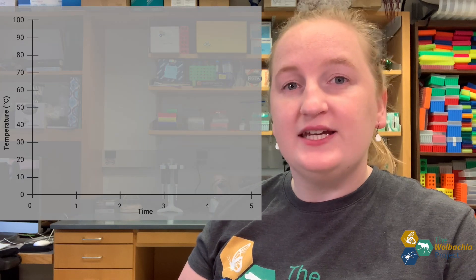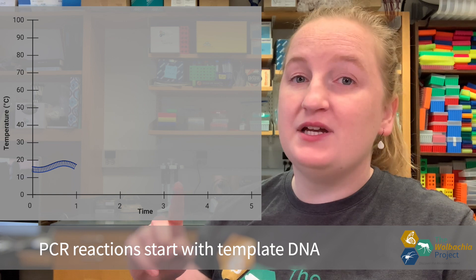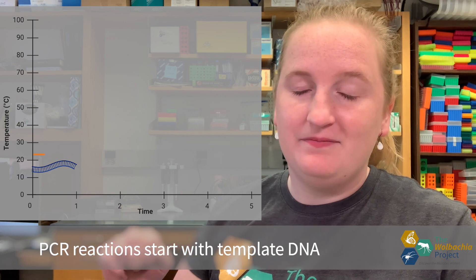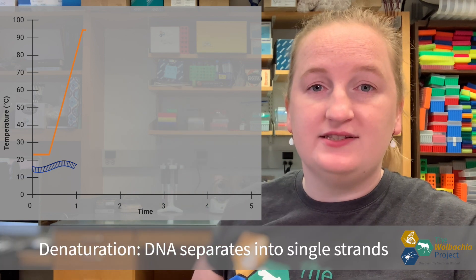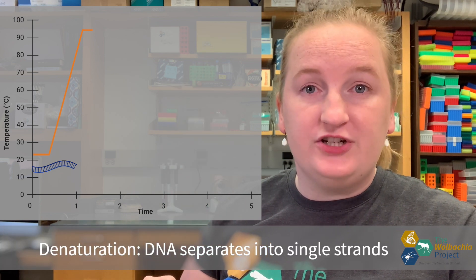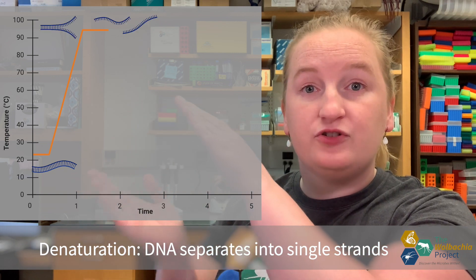That's the beauty of PCR. PCR uses heat to control the replication process, so that one copy of DNA can become a billion copies of DNA. First, our PCR reaction is heated up to 94 degrees Celsius. This is the denaturation temperature, or the temperature where the DNA separates from a double strand into two single strands.